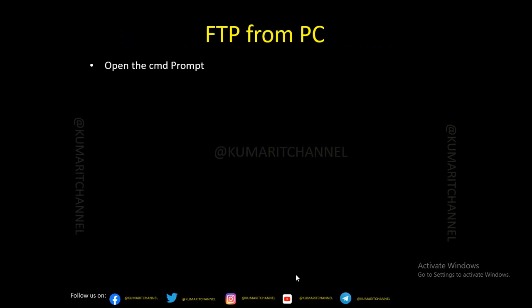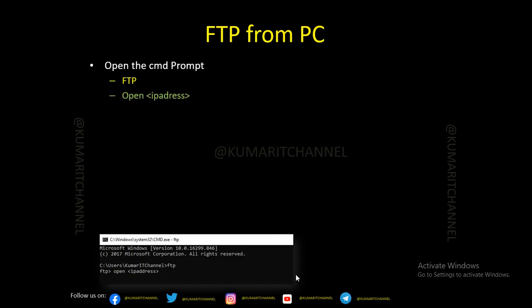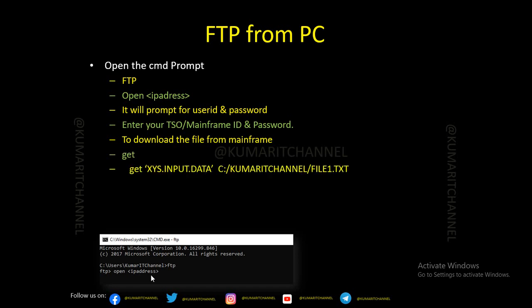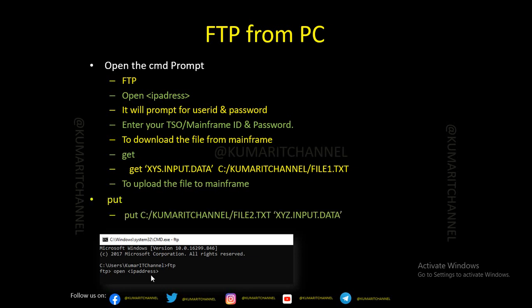Now, FTPing a file from your PC. As I said, another option is using an FTP command. You open your command prompt, type FTP, and FTP prompt mode is enabled. Then you enter 'open' followed by the IP address. After entering the IP address, it will prompt for your user ID and password — you enter your TSO mainframe ID and the provided password. To download the file from mainframe to your local system, you use the 'get' command with the mainframe dataset name and the target file. To upload the file back to mainframe, you use the 'put' option.